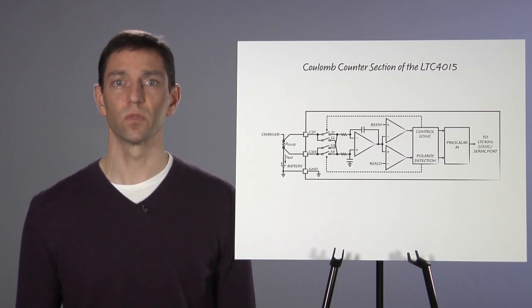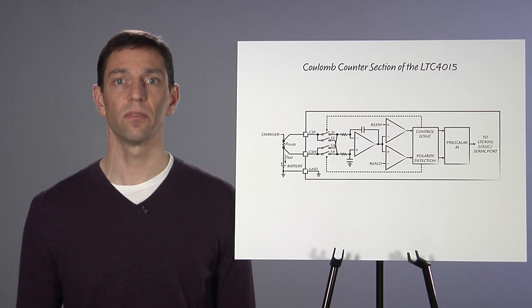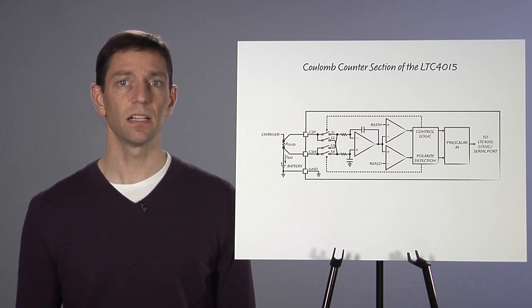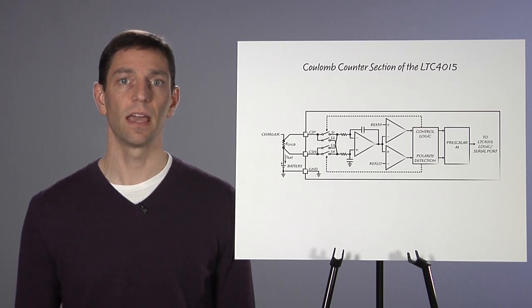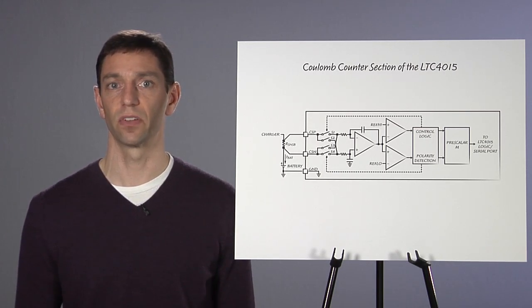The battery series resistance parameter is of particular importance because when combined with the Coulomb counter information, the overall health of the battery can be tracked. Battery series resistance tends to increase as the battery ages and degrades. By setting a limit on this resistance, the system can be alerted and the user can be notified to replace the battery prior to a catastrophic failure.